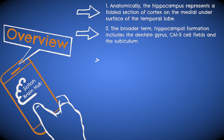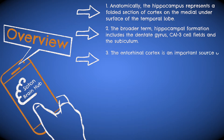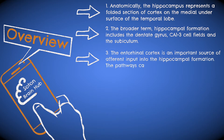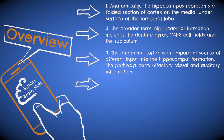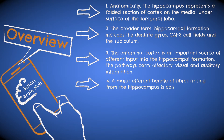It's important also to mention the entorhinal cortex, which is an afferent input into the hippocampal formation, carrying olfactory, visual, and auditory information. Finally, the fornix is an important efferent bundle of fibres from the hippocampus, which forms part of the limbic system.